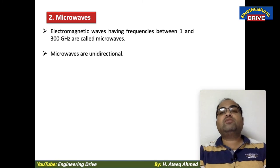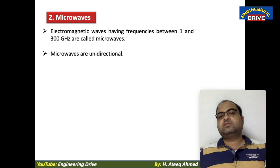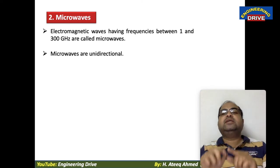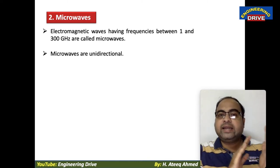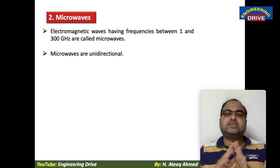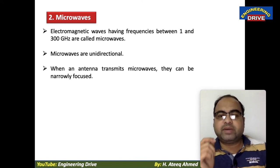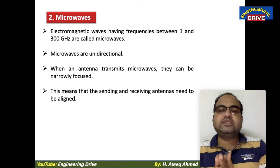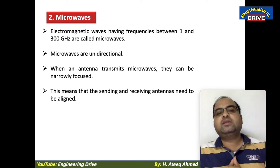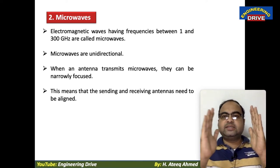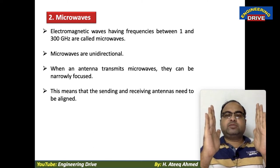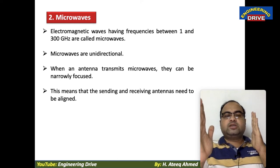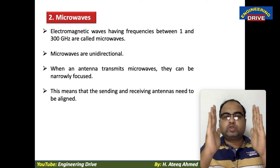Microwaves are unidirectional — they can be transmitted in only one direction, unlike radio waves which are omnidirectional. When an antenna transmits microwaves, they can be narrowly focused. This means the sending and receiving antennas need to be aligned with each other; they cannot be in different orientations, otherwise the microwaves cannot reach the receiver.